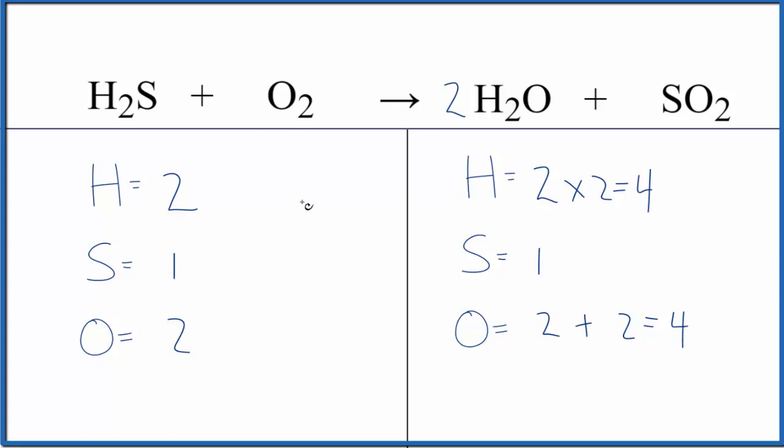Now we could fix the hydrogens by putting a two in front of the H2S. Two times two, that gives us four hydrogens. One times two, that would give us two sulfurs. Okay, we're almost there. If we put a two in front of the SO2, the sulfur dioxide, one times two, those are balanced. Let's fix the oxygens here. Two times one is two, plus two times the two, that's four. So now we have six.